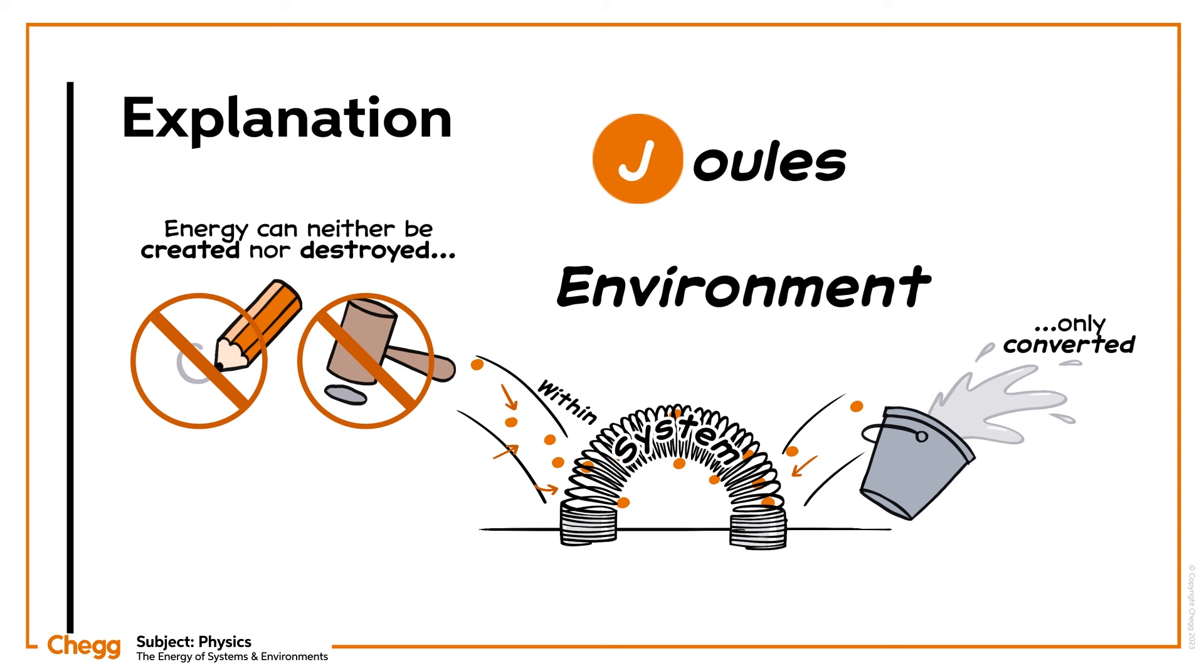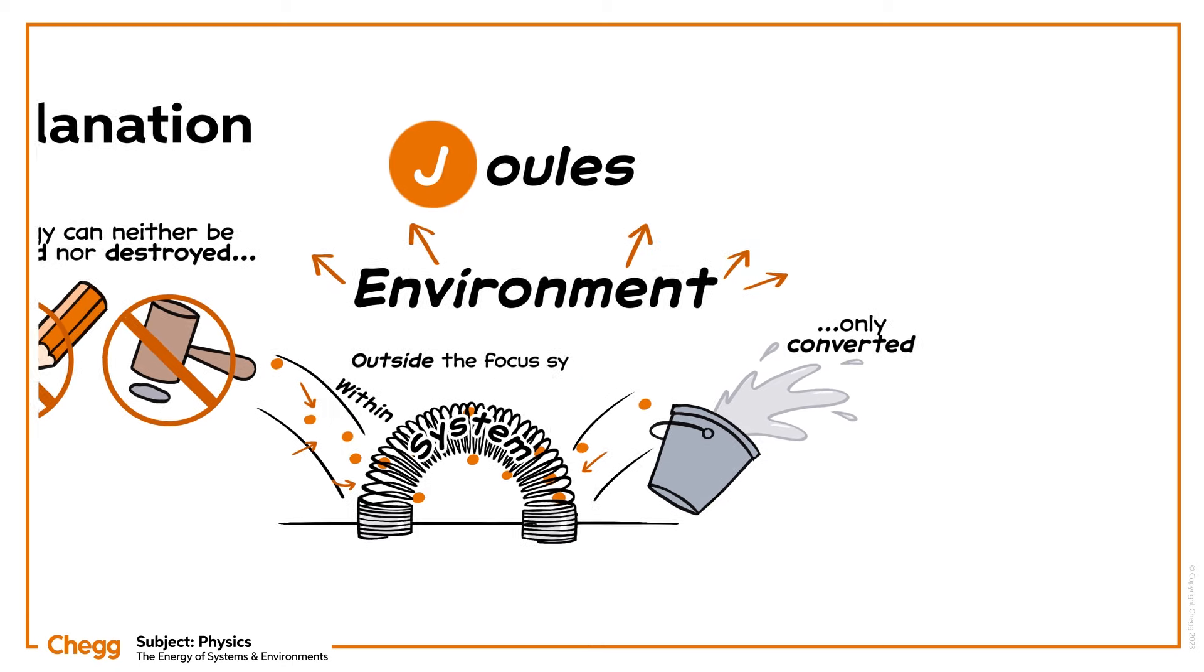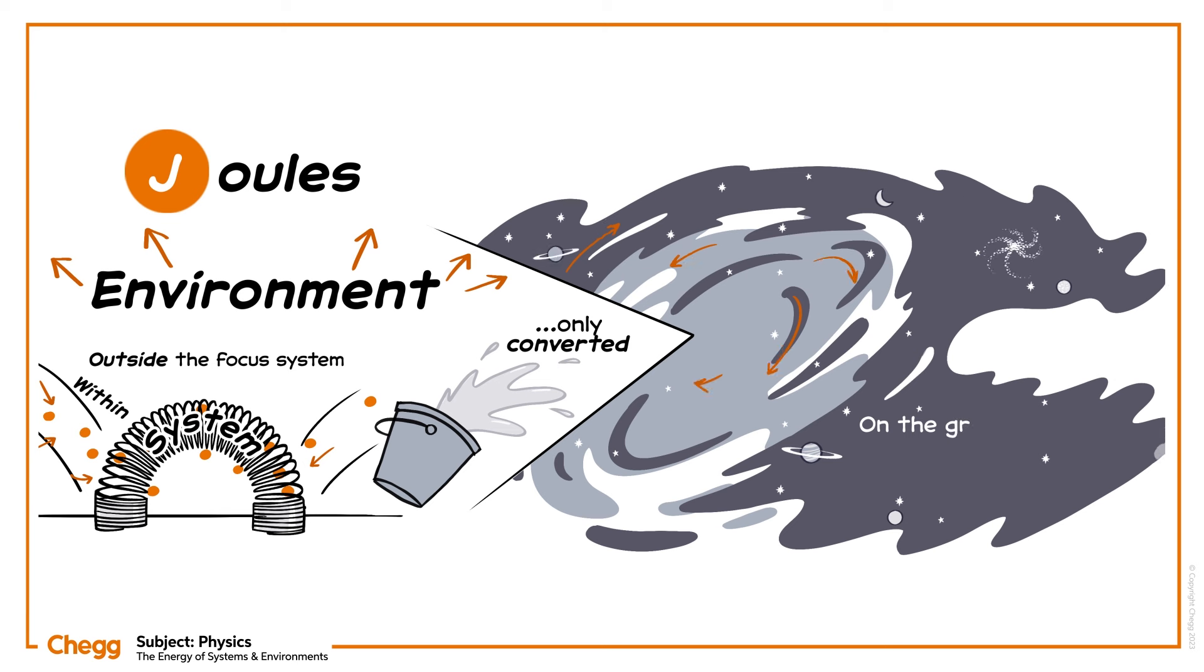Systems, then, are specific objects or sets of objects, and environments are everything outside those systems. On the grand scale, the entire universe is the biggest system and environment we can imagine, but let's not get carried away.